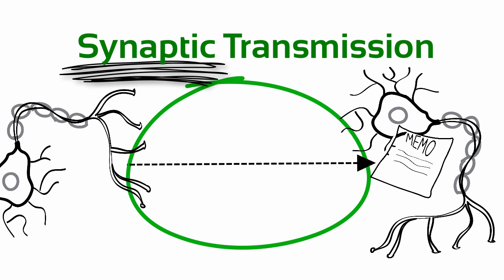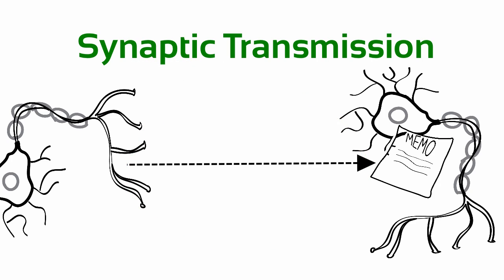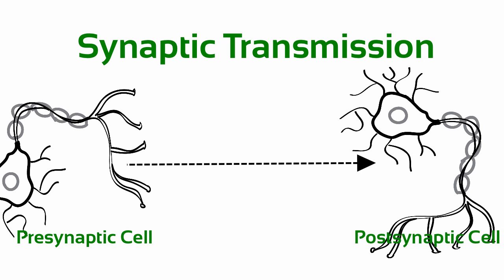So the individual elements that we need to understand here are the two communicating cells and the space between them. The two cells are called the presynaptic cell and the postsynaptic cell. The space, of course, is called the synapse, and it's not really empty space but filled with fluid and chemicals.